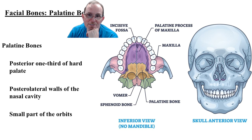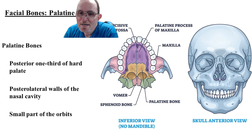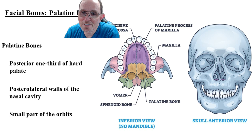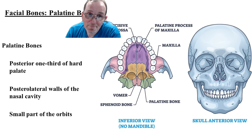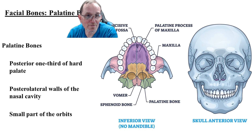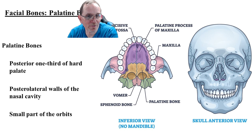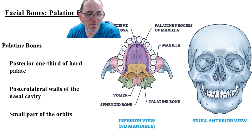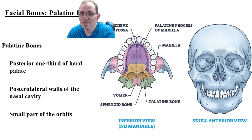You can see the palatine process of the maxilla and the palatine bone. There's the middle nasal concha and here's the inferior nasal concha — you cannot see the superior nasal concha because it's buried deeper. A very small part of the orbit is part of the palatine bone, but mainly it forms the last part of the hard palate before you get to the soft palate at the back of your mouth.